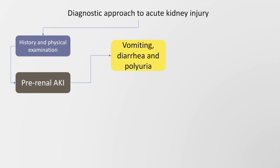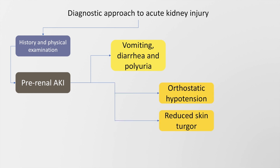Pre-renal AKI is suggested by a preceding history of vomiting, diarrhea, and polyuria. Examination might reveal orthostatic hypotension, reduced skin turgor, and dry mucous membranes.